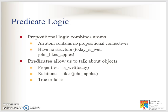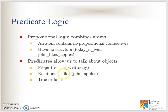Predicate logic allows us to talk about objects that have properties, relations, and truth values. For example, the relation 'is wet' and the object 'today' gives us 'today is wet.' A relationship with two objects: the first object likes a second object because the relationship is 'like,' so 'John likes apples.' You can have more objects here — John likes apples, orange, grapes, and so on. You can also have true and false as in propositional logic.